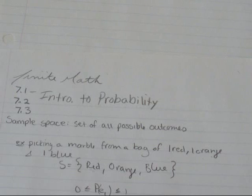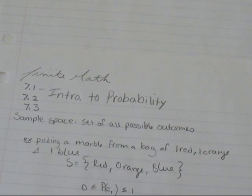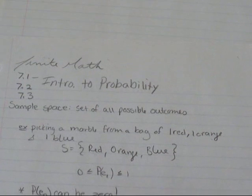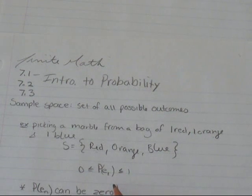So, a lot of people think that probability would be a percent. Let's say the probability of winning the lottery is one percent. Well, that's actually not true. We always want to write probability as a number between zero and one.